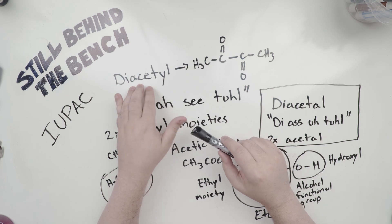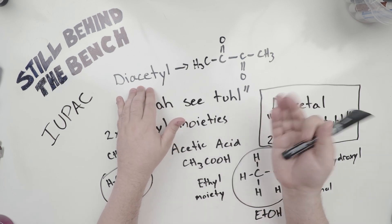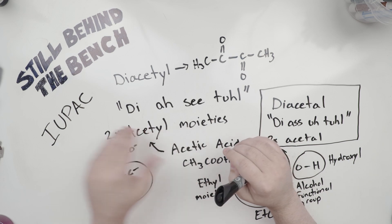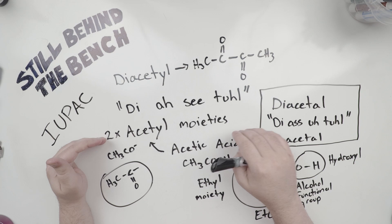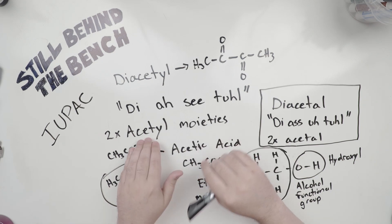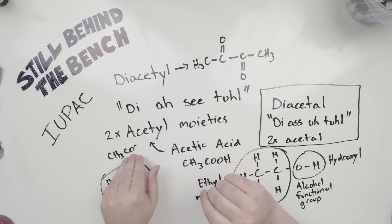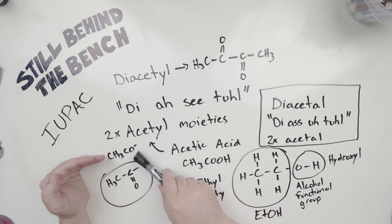So pronunciation. Diacetyl. This is pronounced diacetyl. Why is that? It's because diacetyl is made up of two acetyl moieties. And I'll get into what moieties are in a bit. But an acetyl moiety is a radical of acetic acid. So what do I mean by that? Because this oxygen here isn't attached to anything, that means it's very reactive.